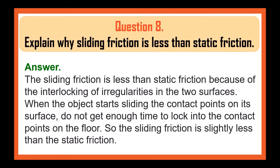Explain why sliding friction is less than static friction. Sliding friction is less than static friction because of the interlocking of irregularities in the two surfaces. When the object starts sliding, the contact points on its surface do not get enough time to lock into the contact points on the floor. So the sliding friction is slightly less than the static friction.